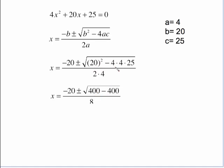Here's the arithmetic worked out. 20 squared is 400. Multiply all this together is 400 also. So 400 minus 400 is zero here. So that the square root part just goes away. This is negative 20 plus or minus zero. So that drops off. All we're looking at is negative 20 over 8 which reduces the negative five halves.